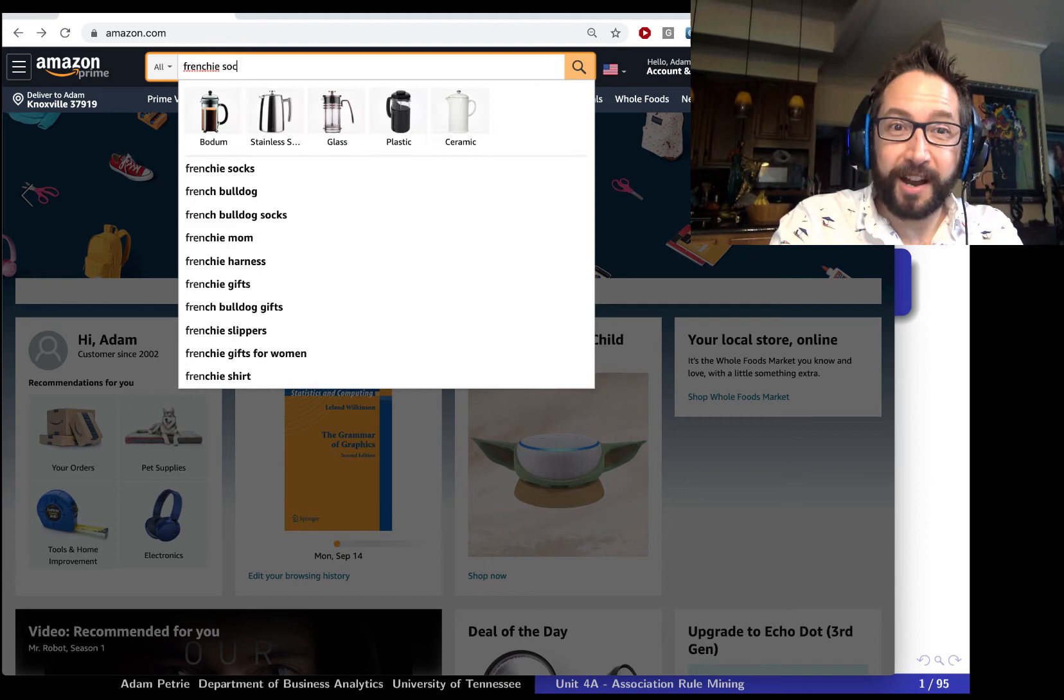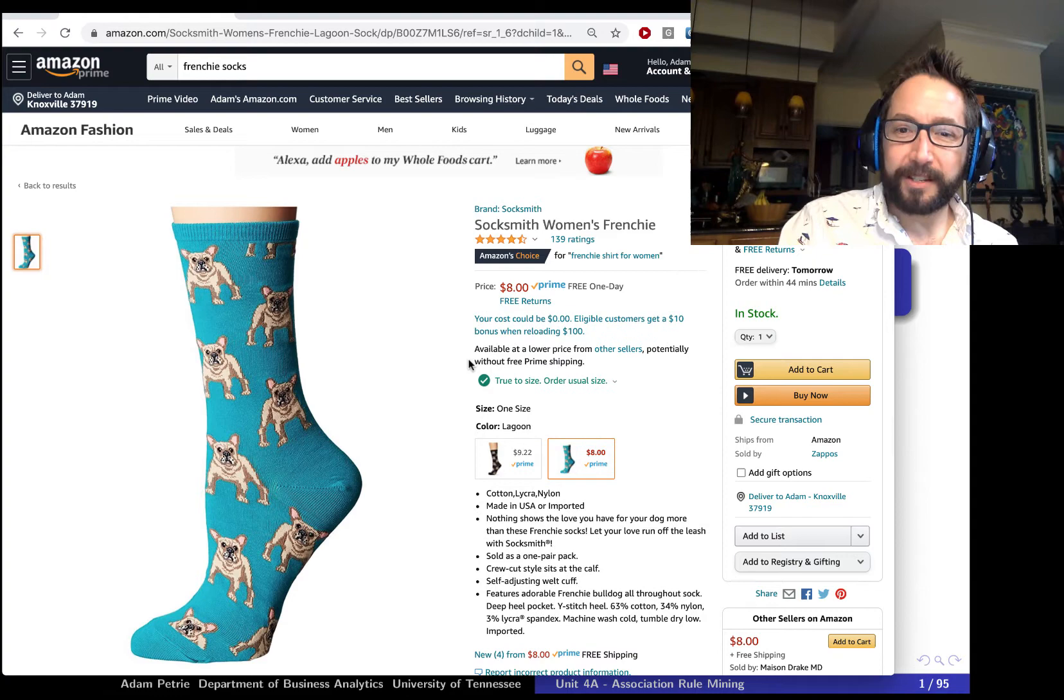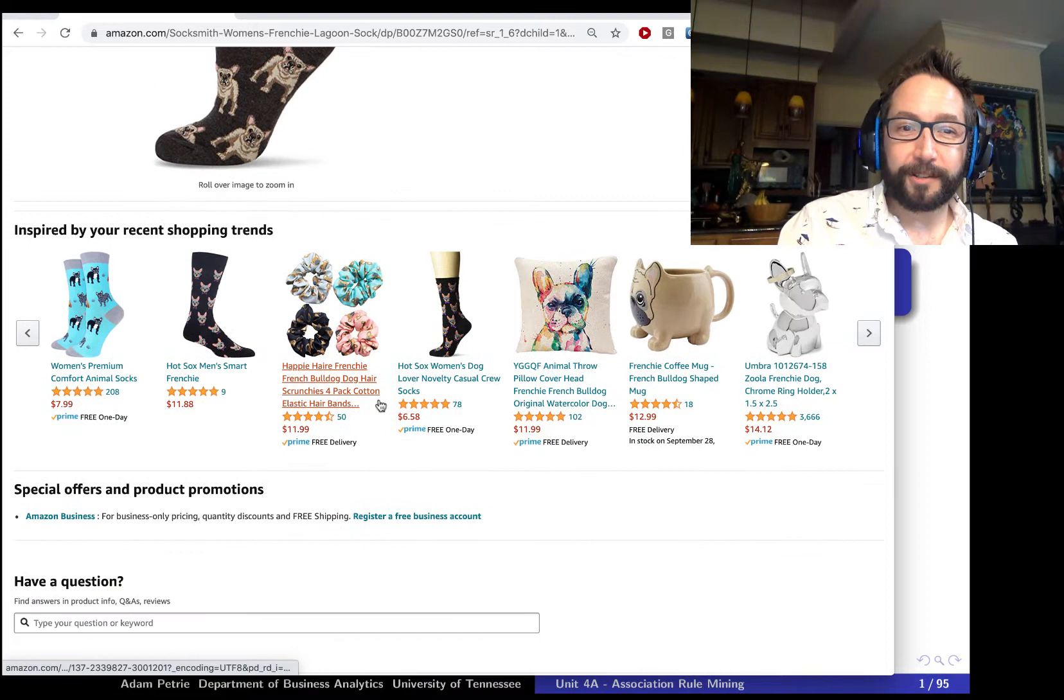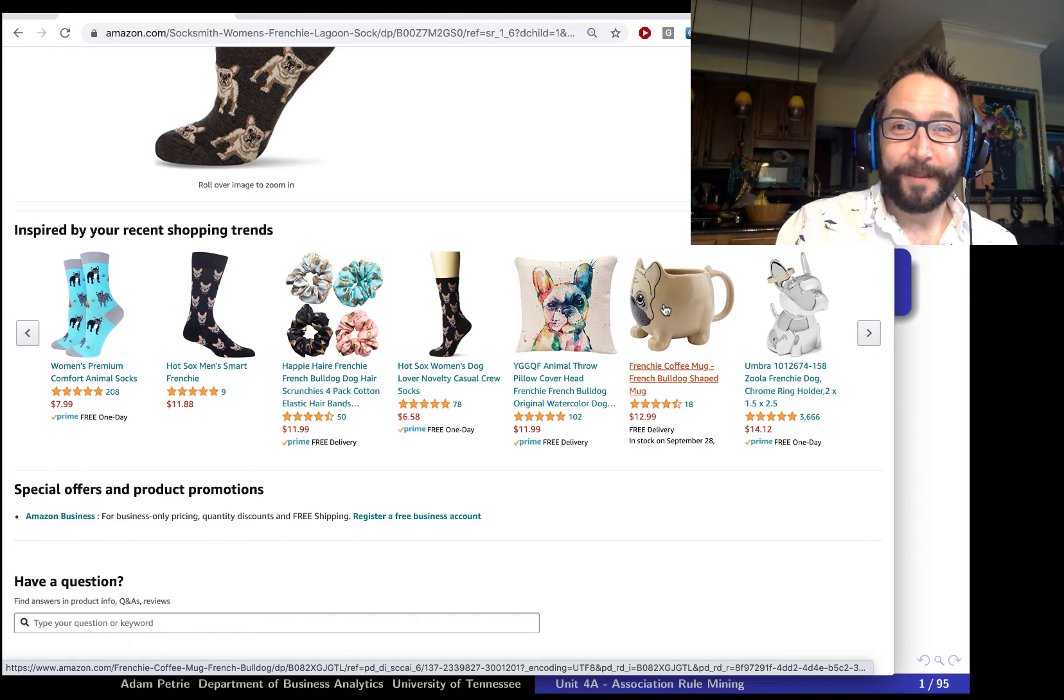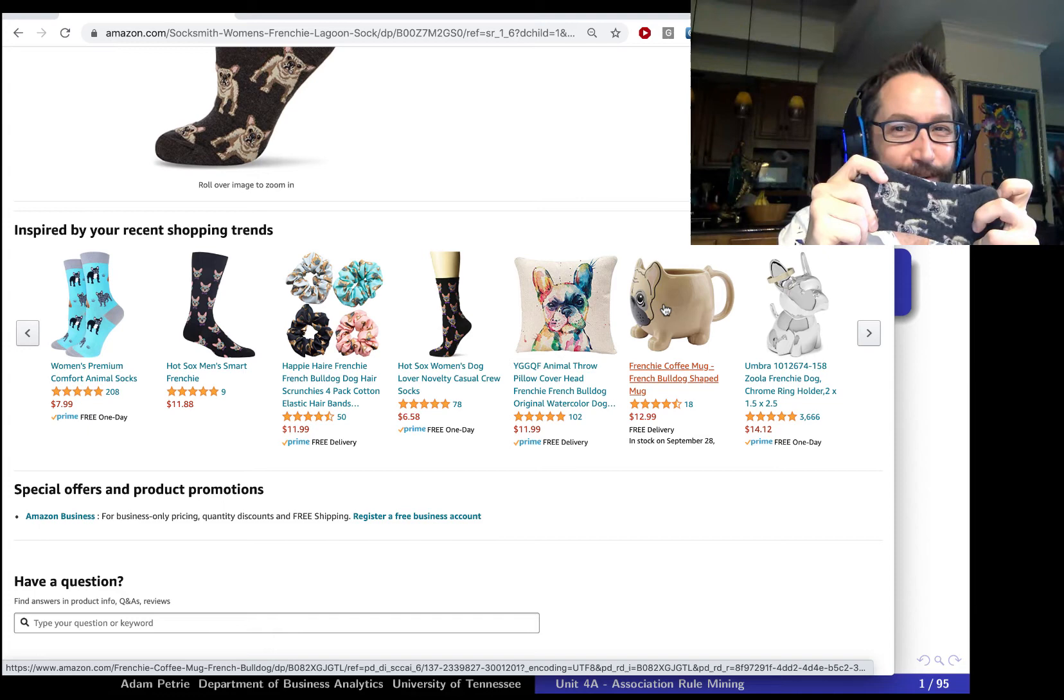If we head on over to Amazon and search for an item that we find interesting, like maybe some Frenchie socks, and we click on an item, it's going to do its best to come up with a list of items that, based on what we're looking at right now, might seem interesting to us. And indeed, inspired by the recent shopping trends that I've looked at, we got some other Frenchie socks, which look great. A hair scrunchie, not really going to do much with that. Frenchie pillow, adorable Frenchie mug. Yeah, you know, sign me up. I'm very interested for this. And so Amazon knows what they're doing.